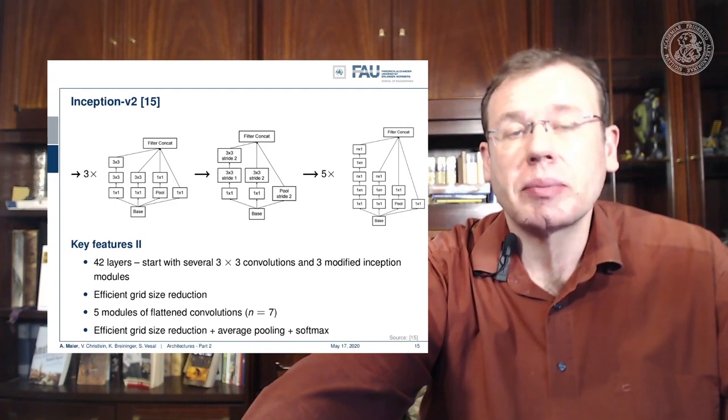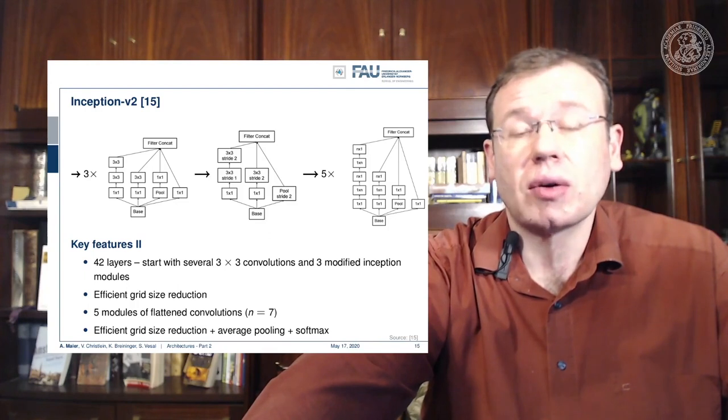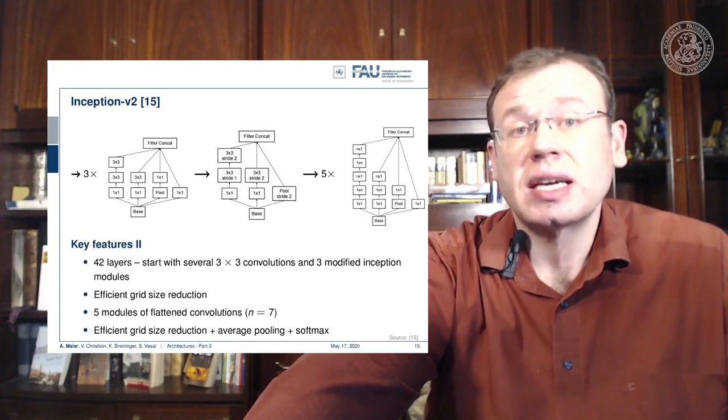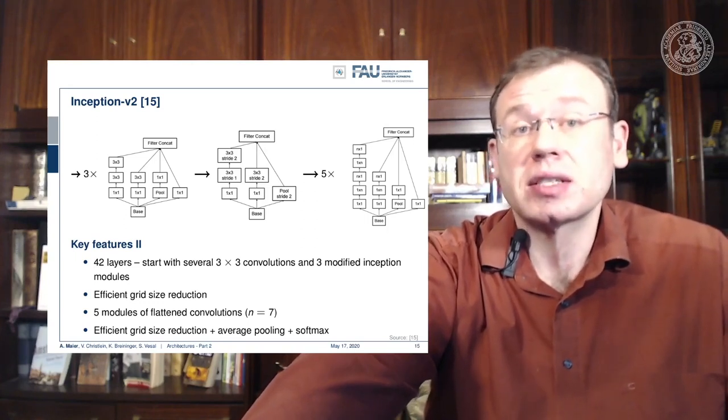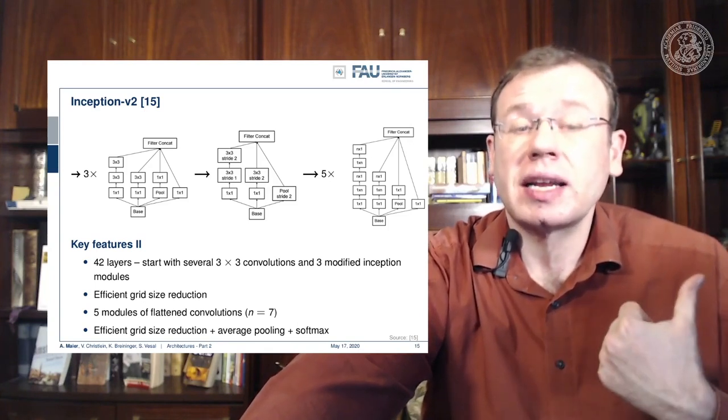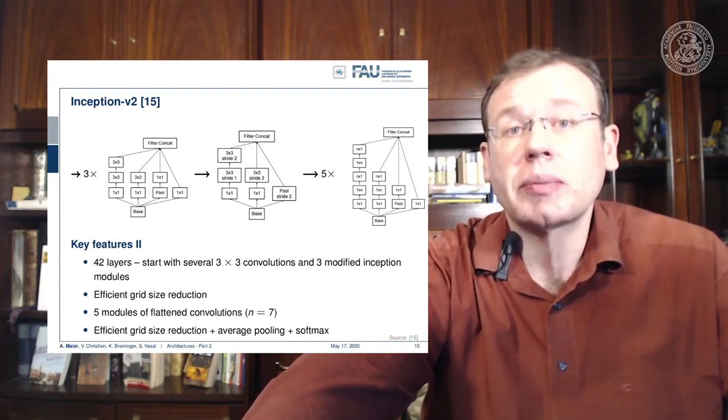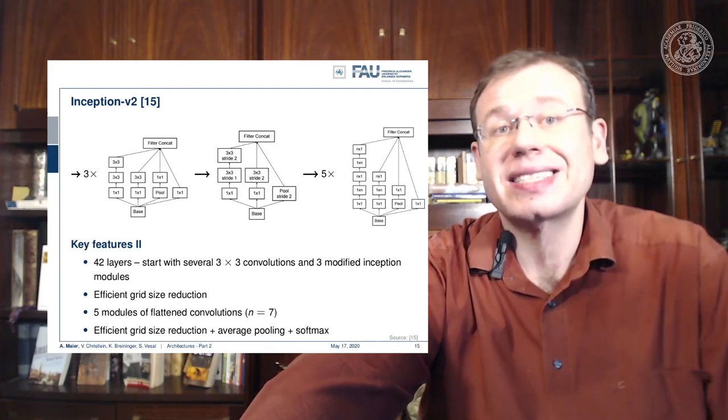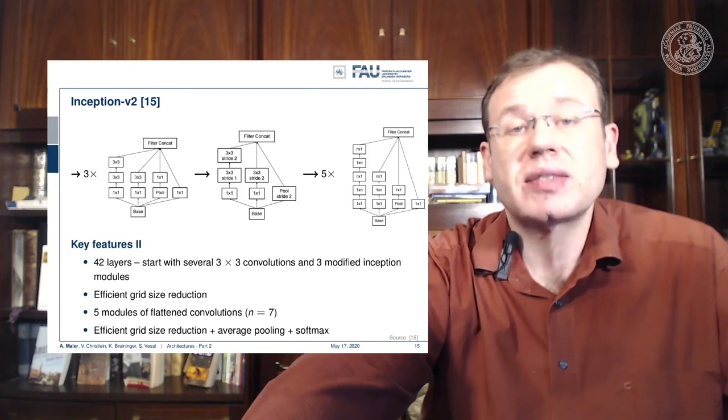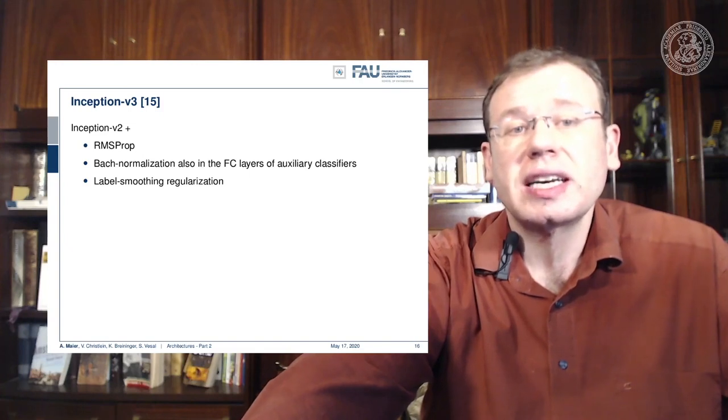We can also see that separation of convolution filters also works for a broad variety of filters. Of course, this is a restriction—it doesn't allow all of the possible computations. But remember, we have in the earlier layers full three by three convolutions, so they can already learn how to adopt the later layers such that they can then be processed by the separable convolutions. That's very efficient, and this then leads to inception v3.